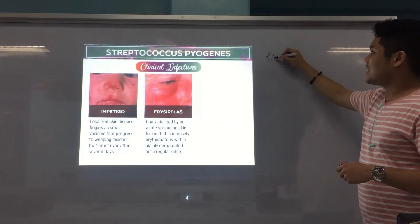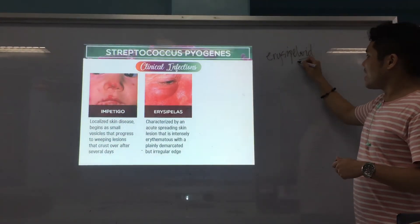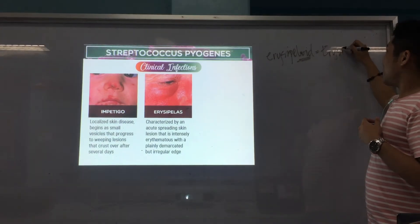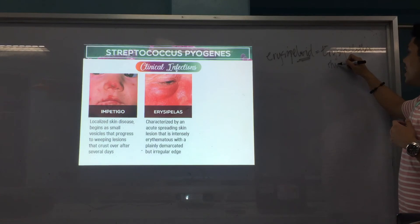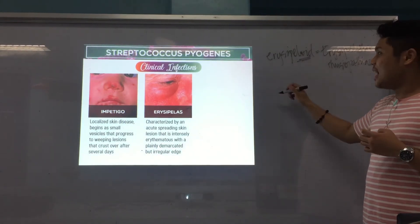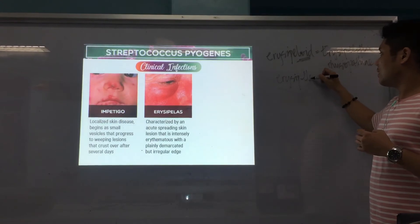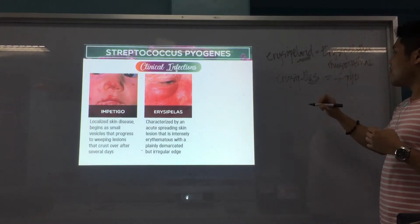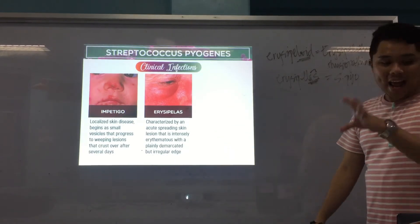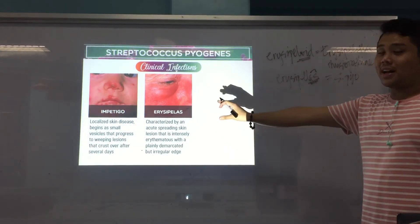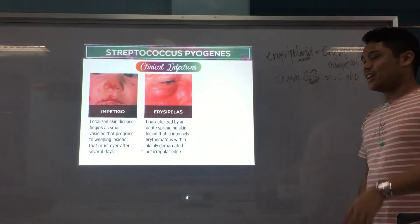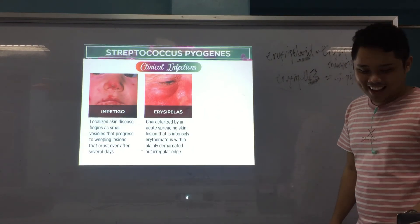There is also erysipeloid — caused by Erysipelothrix — which is different from erysipelas. A memory tip: erysipelas (ends in '-las') is caused by Group A Strep (S. pyogenes), while erysipeloid (ends in '-oid') is caused by Erysipelothrix rhusiopathiae. These are two distinct conditions caused by different organisms.